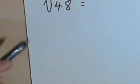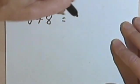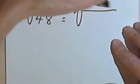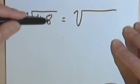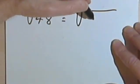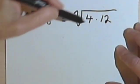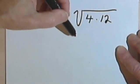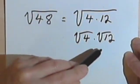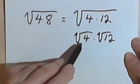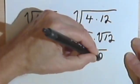Here's a slightly more complex example. Let's say we have the square root of 48. I want to find two factors of 48 so that one of them is a perfect square. Well, I can divide 48 by 4, which gives me 4 times 12. So the square root of 48 equals the square root of 4 times 12. I'll put this under two radical signs: the square root of 4 times the square root of 12. The square root of 4 is 2, so I'm going to have 2 times the square root of 12.